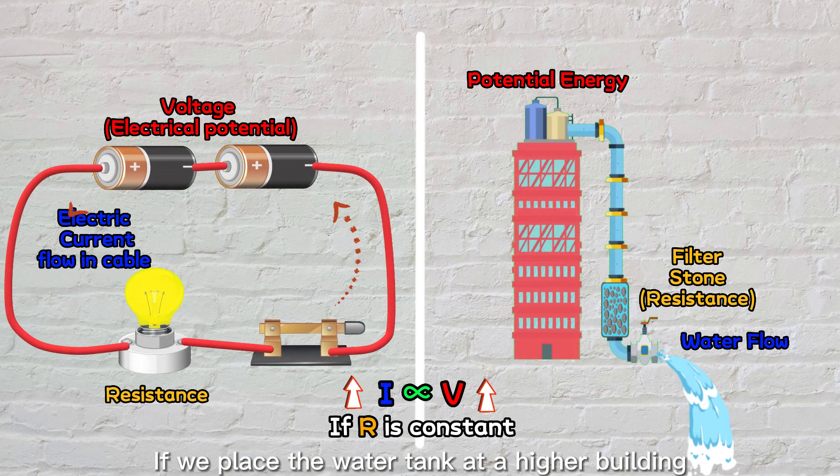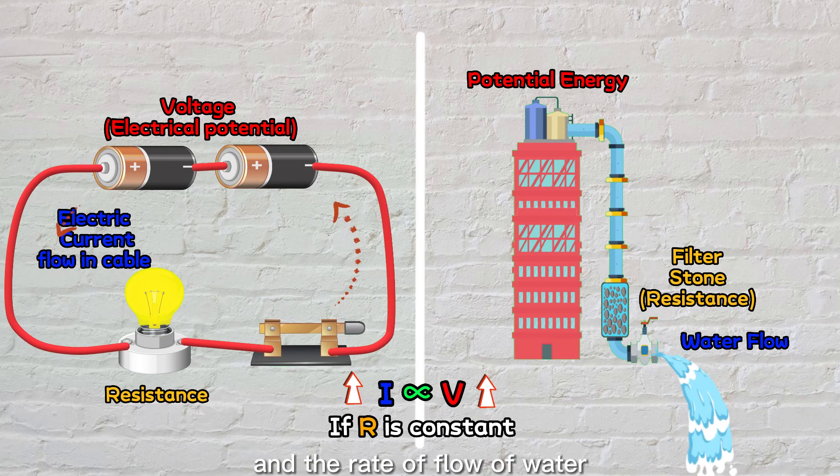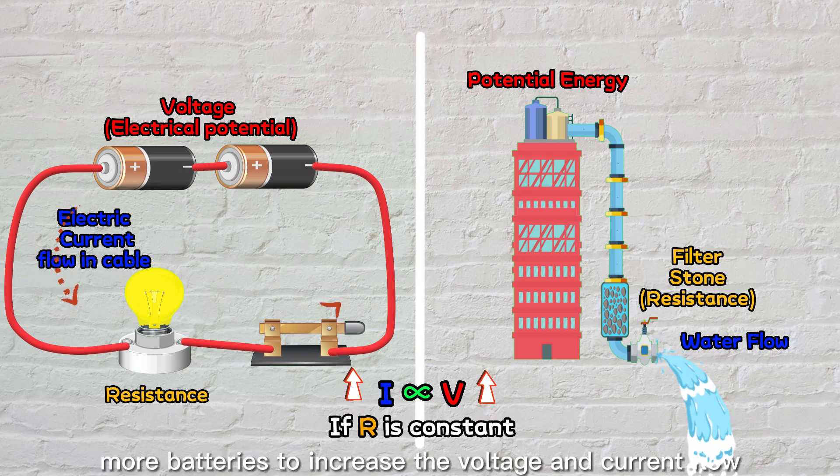If we place the water tank at a higher building, we increase the potential energy and the rate of flow of water. Just like adding more batteries to increase the voltage and current flow.